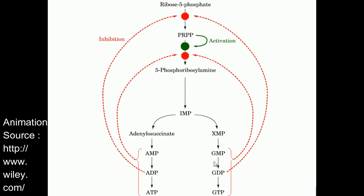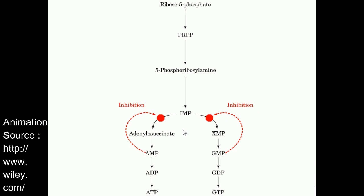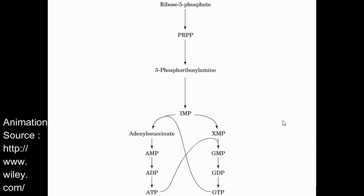Amidophosphoryltransferase is also subject to allosteric feedback inhibition by products: AMP, ADP, ATP, GMP, GDP, and GTP. Any of these present will feedback-inhibit the enzyme, preventing formation of 5-phosphoribosylamine. In the branched pathway beyond IMP, AMP acts as a competitive inhibitor with IMP for the production of adenylosuccinate, and GMP acts as a competitive inhibitor of IMP to prevent its conversion into XMP, thus regulating the adenine and guanine branches respectively.